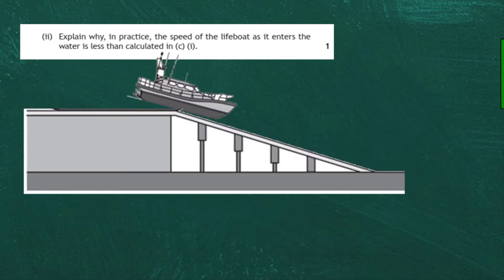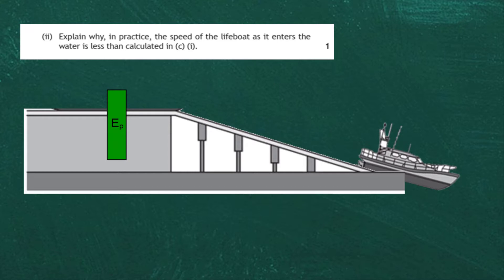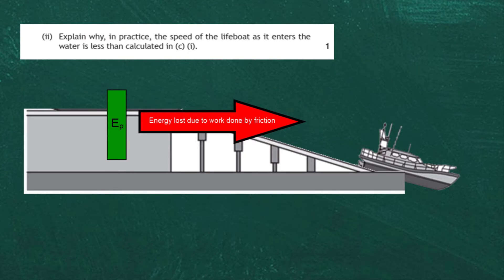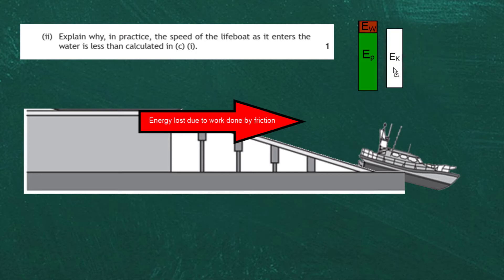Part D: Explain why in practice the speed of the lifeboat as it enters the water is less than calculated in part C. In practice, as the lifeboat moves down the ramp, some of the potential energy is transferred into sound energy — it makes a noise going down — and some energy is lost due to work done by friction. This means less kinetic energy is available at the bottom of the ramp.